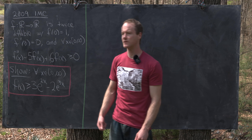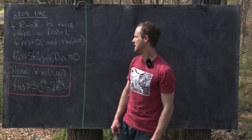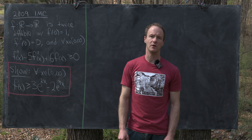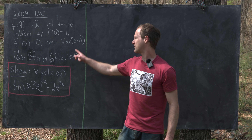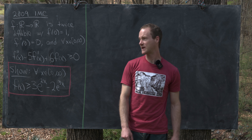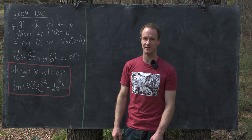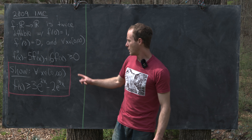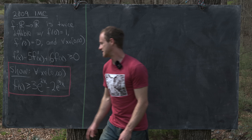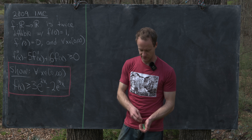We have a twice differentiable function f from ℝ to ℝ satisfying three conditions: f(0) = 1, f'(0) = 0 — those are our initial conditions — and for all non-negative real numbers x, f''(x) − 5f'(x) + 6f(x) ≥ 0. We want to show that for all x ≥ 0, f(x) ≥ 3e^{2x} − 2e^{3x}.